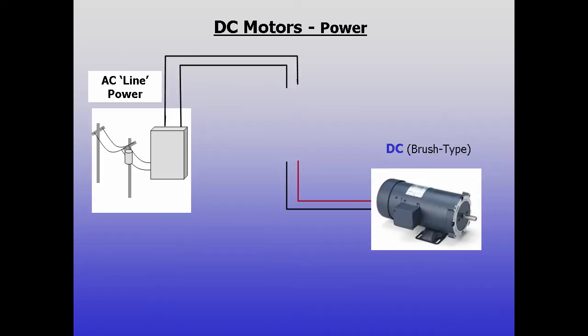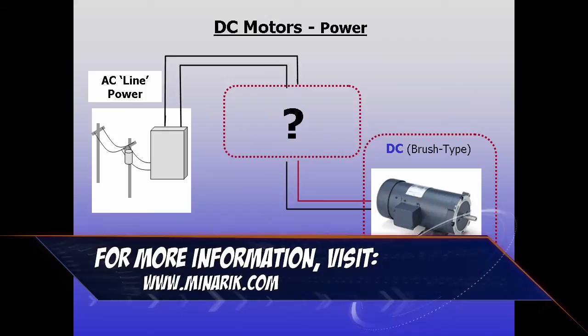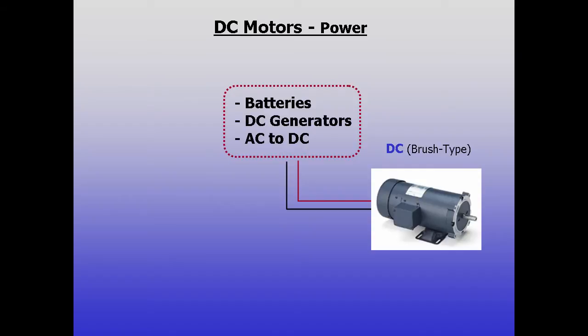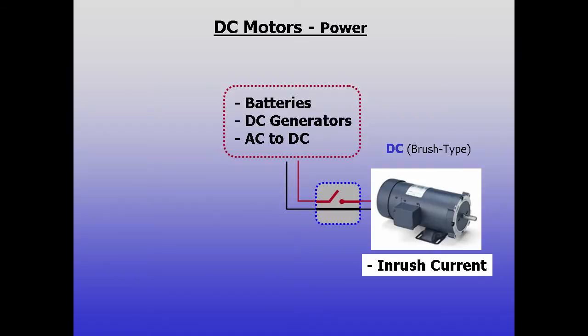DC motors are also very useful in industrial applications and in some cases they can outperform AC. The difference is that large sources of DC power are not as common. Most DC power comes from batteries, DC generators, or AC converted to DC.